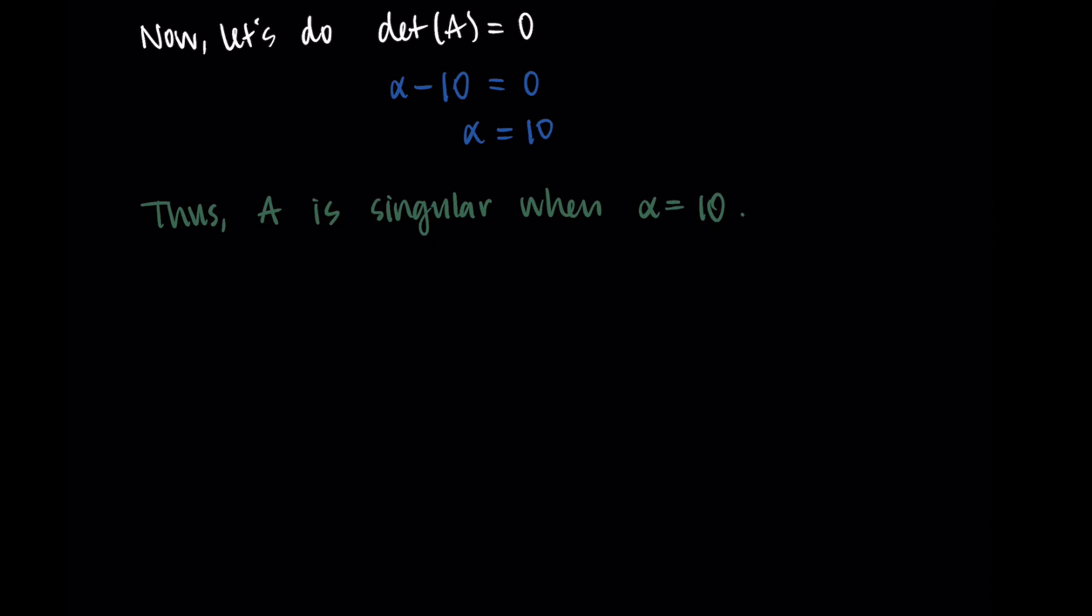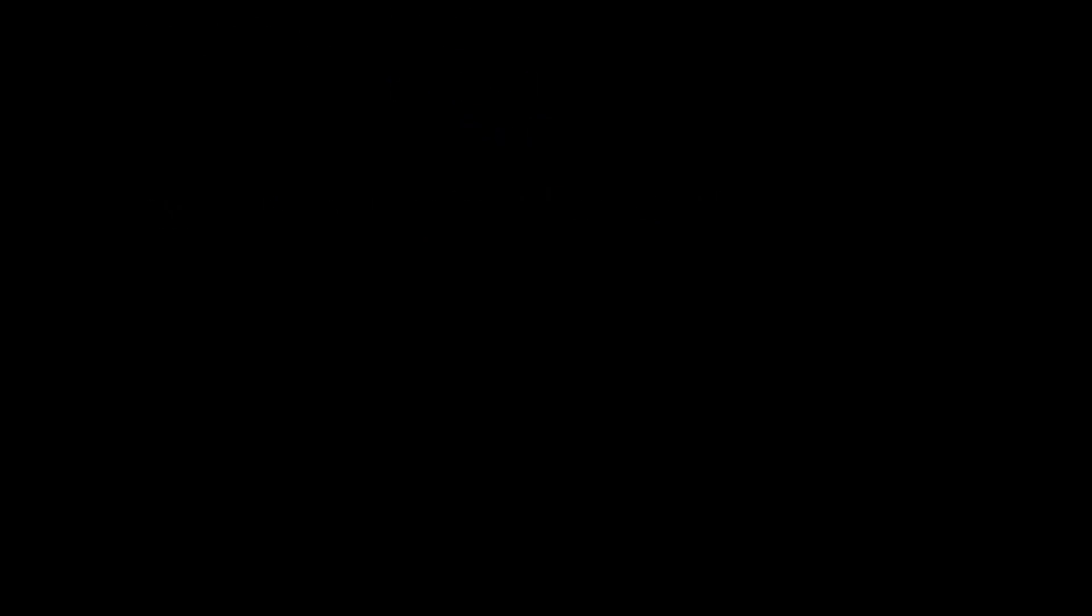And that's it. So this is how the determinant is related to invertibility and how we might use it to find a matrix that is invertible or not invertible. That's it for this video. Thanks so much for watching, and I will talk to you in the next one.